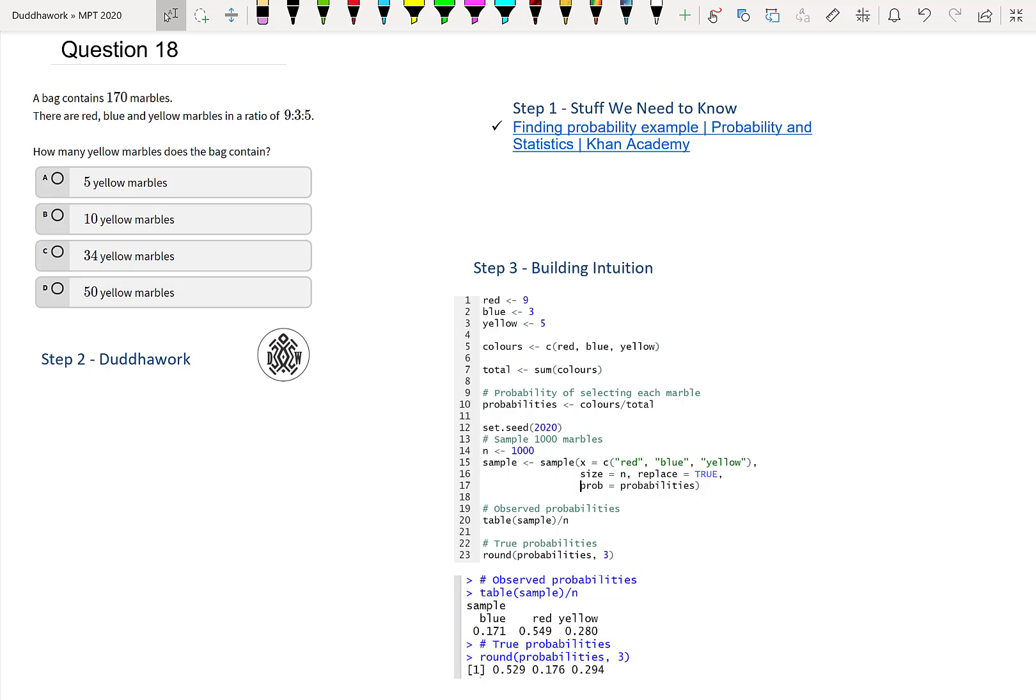We're asked if a bag contains 170 marbles, with red, blue and yellow marbles in a ratio of 9, 3, 5. How many yellow marbles does the bag contain?